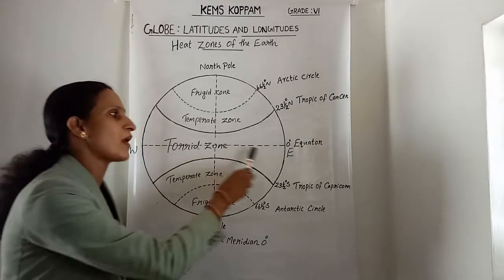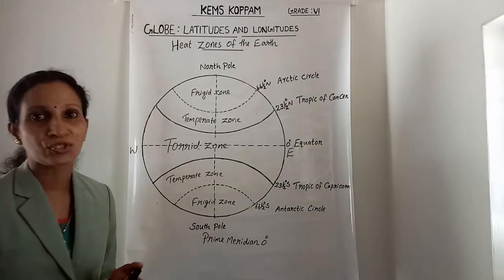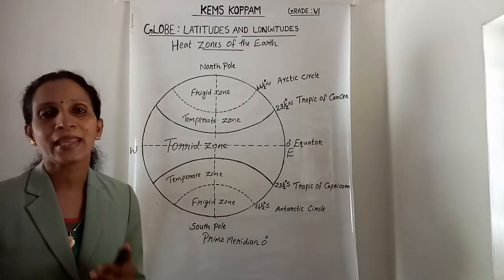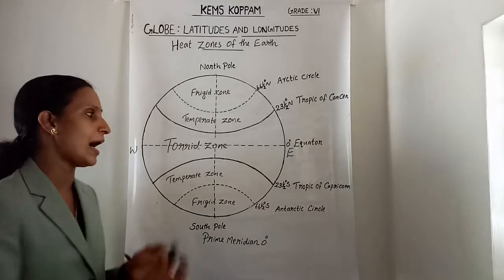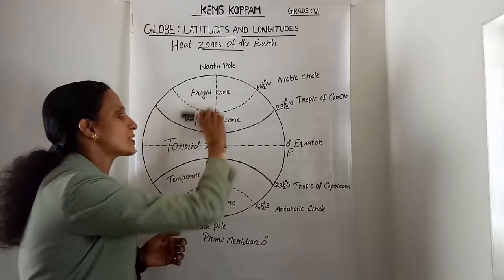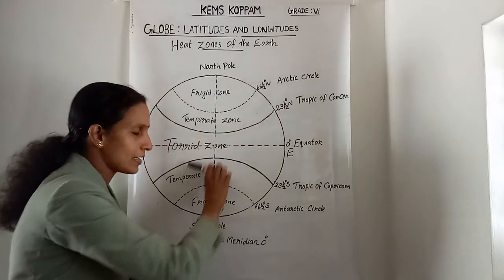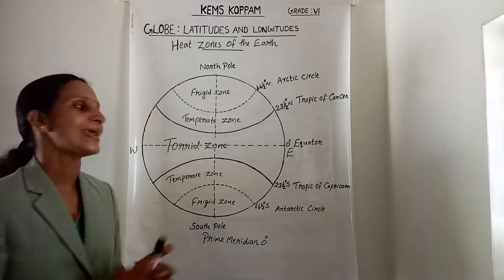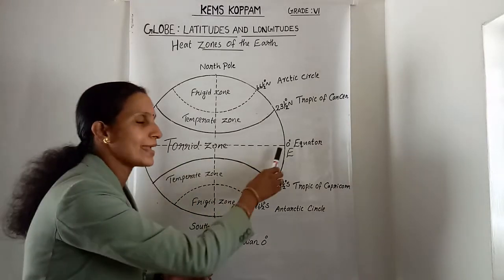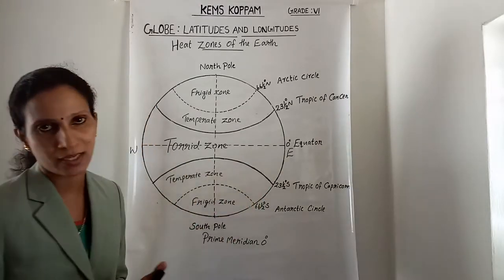The equator divides the earth into two equal halves — the northern hemisphere and the southern hemisphere. The equator indicates 0 degrees.